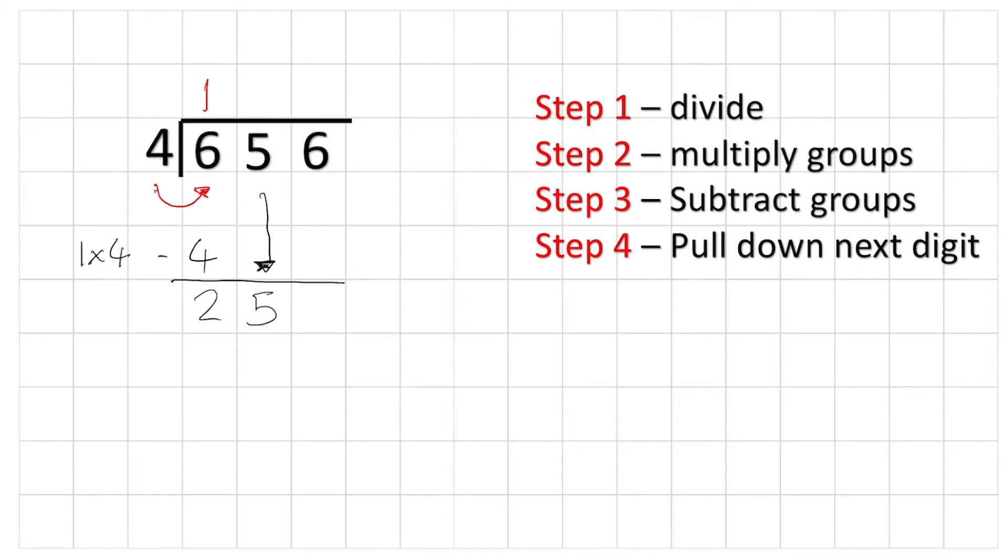Now I can ask myself, how many 4's are there in 25? We can count up in our multiplication table if we want to try and do it that way. 4, 8, 12, 16, 20, 24. And I can't go to 28 because that would be more than 25 and that would be too many. So the answer is 6. And let's see how many we took away that time. So 6 times 4 equals 24. Take that away. And I'm left with 1.